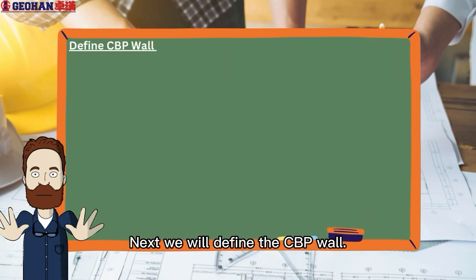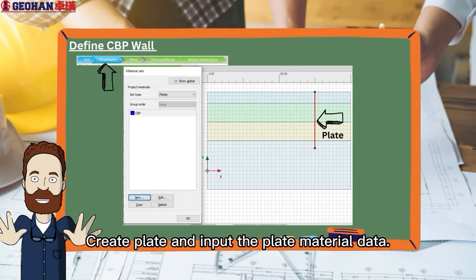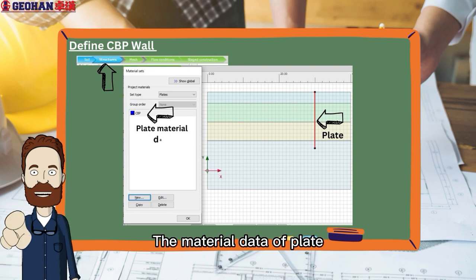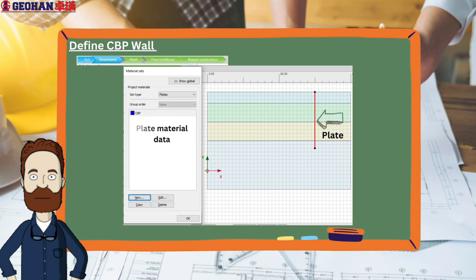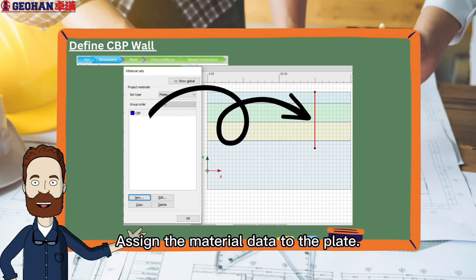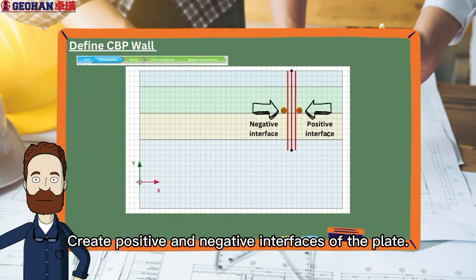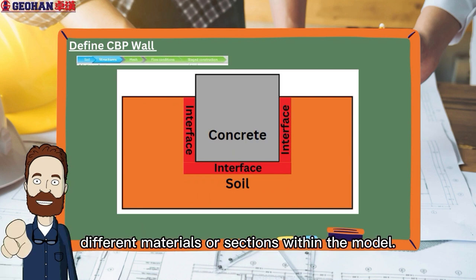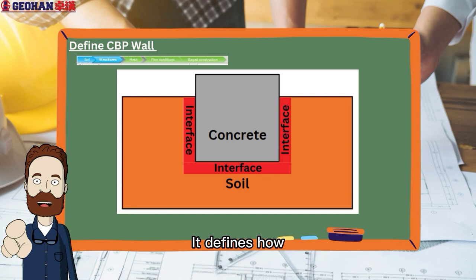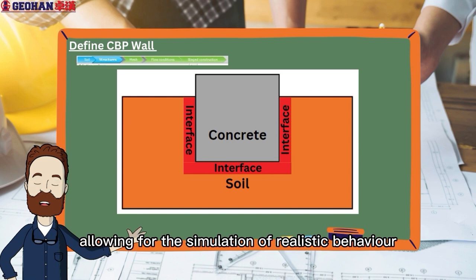Next, we will define the CBP wall. Go to Structures tab, create plate, and input the plate material data. The material data of plate element will be derived in terms of per meter run basis. Assign the material data to the plate. Create positive and negative interfaces of the plate. The term interface refers to the boundary or interaction between different materials or sections within the model. It defines how different materials or elements interact with each other, allowing for the simulation of realistic behavior in the analysis.